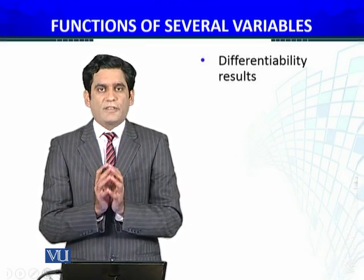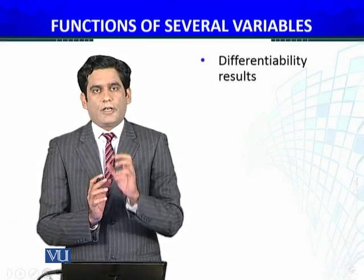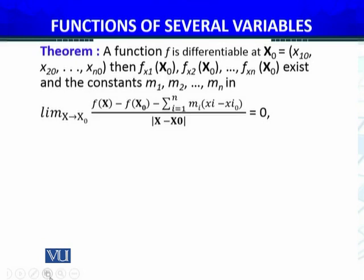Let's state the theorem and prove it. The theorem states that if a function f is differentiable at x0, then the partial derivatives f_x1(x0), f_x2(x0), ..., f_xn(x0) exist, and the constants M1, M2, and so on in this definition